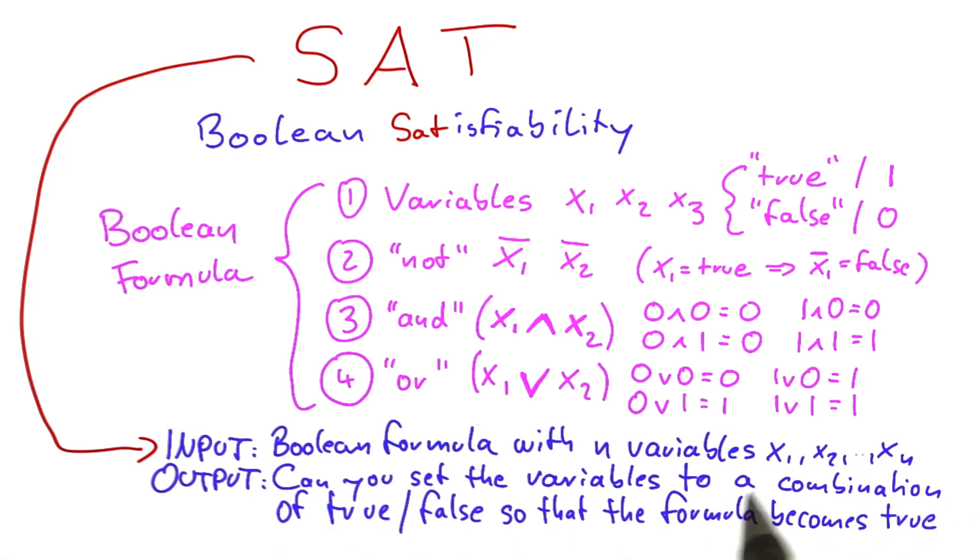And the question is, can you set the variables x1 to xn to a combination of true or false so that the whole formula that you're given in the input becomes true? And the answer to that can, of course, only be yes or no. So again, SAT is a decision problem.